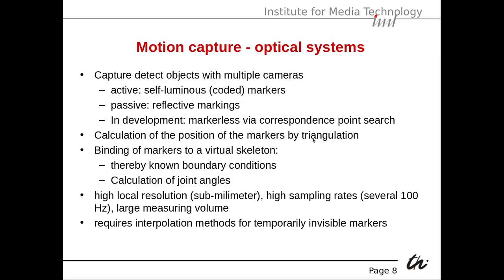The position of markers is calculated by triangulation. When you have multiple cameras, each position has a different angle to each camera, and these angles are used to compute the position in space. You could also use a known size — if you know a person's head has a certain size, and it appears smaller in the image, you know it must be further away. Markers are then bound to a virtual skeleton at known points, so we know boundary conditions and can calculate joint angles, giving high local resolution, perhaps even sub-millimeter.